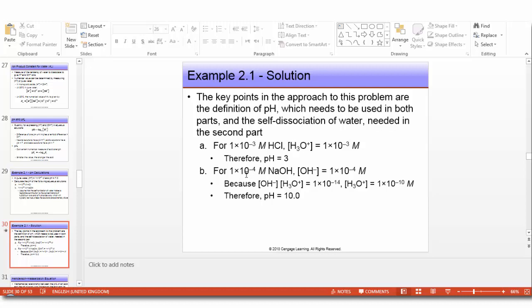For 1 times 10 to the minus 4 M NaOH solution, we must first find the concentration of H+ from the ion product constant. The concentration of OH- is 1 times 10 to the minus 4 M. We substitute OH- here and calculate H+ to be 1 times 10 to the minus 10 M. Therefore, pH equals 10.